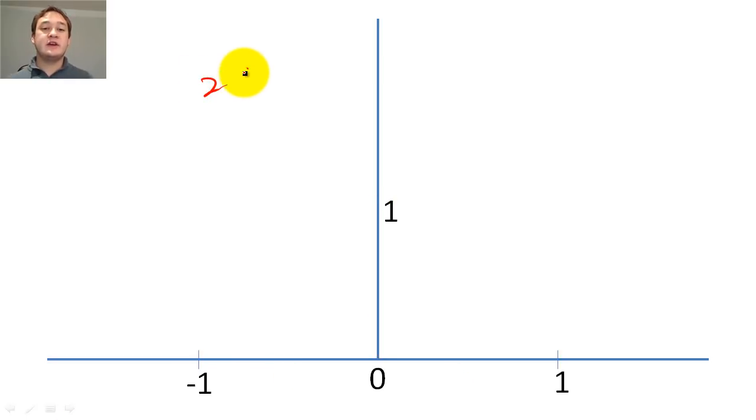If we multiply the delta by a number, we simply scale the area of the delta function by that number.